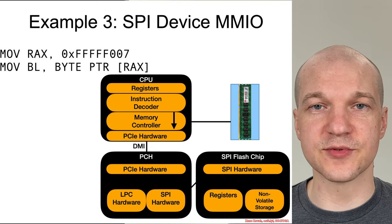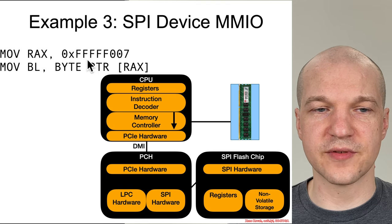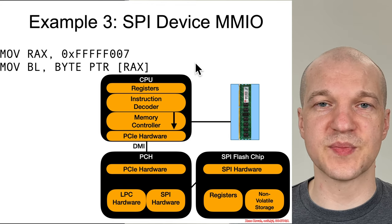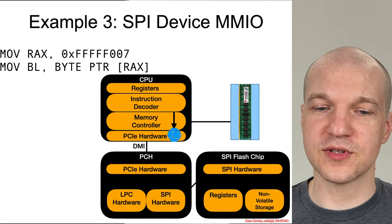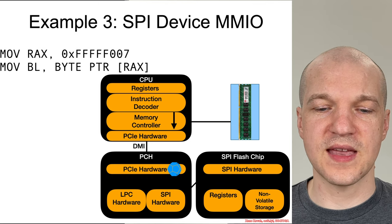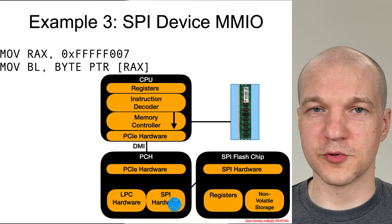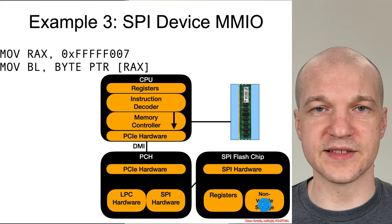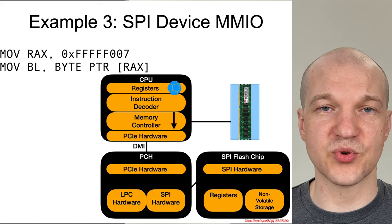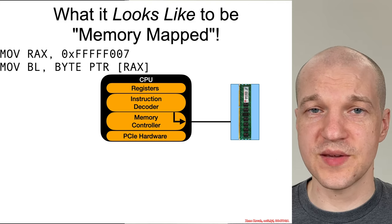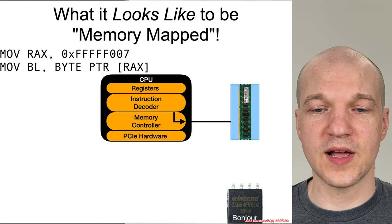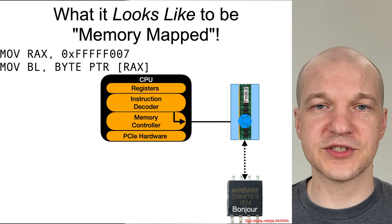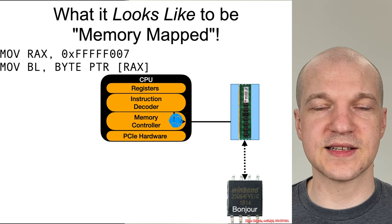One last example: let's say it was the SPI device — the BIOS flash chip. This particular address range, FFFF007, is going to correspond to the SPI flash chip because that particular range is always mapped to the SPI flash and there's nothing you can do about it. So the memory controller sends it down via DMI to the PCH, which determines it's destined for the SPI hardware. The SPI hardware uses the actual SPI protocol to talk to the SPI flash chip, fetches a value, reads it back, and ultimately it gets put into the registers like any other memory read. From the CPU's perspective, the memory controller fetches from memory and through some sort of magic it accesses a SPI flash chip — you get the memory, pull it back, stick it into the registers.